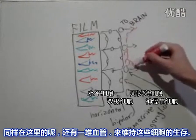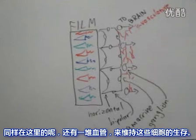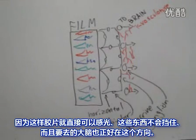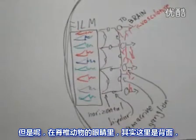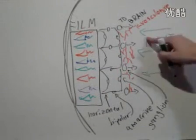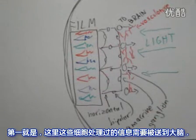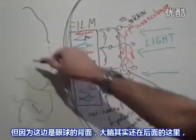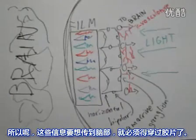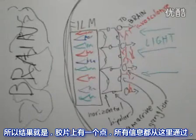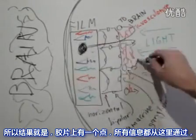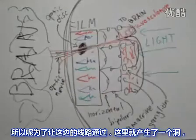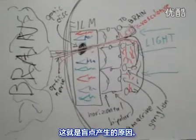Also back there is a bunch of vasculature — little capillaries and blood vessels feeding these cells to keep them alive. If you were designing this system, you'd probably expect light to come in from the front, so the film would be out front, nothing would be in the way, and signals could go to the brain. But in the vertebrate eye, the photosensitive layer is actually at the back, and incoming light comes from the front. Because of this, the information processed by the neuron layers has to travel through the film to reach the brain. There's just a spot on the film where all of the information goes through — that's called the optic disc — and that is where the optic nerve and all of the blood vessels come through. Basically, there's a hole where all the wiring comes through so it can get to the other side. And that is why you have a blind spot.